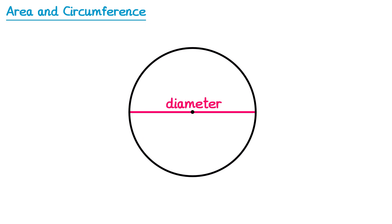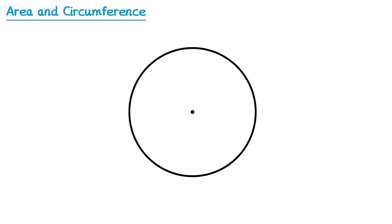For this video you will need to be able to identify the diameter and the radius of a circle. The diameter is always double the radius. For example, if we had a circle where the radius was 4cm, the diameter would be double this, so 8cm.